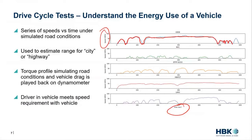And there are lots of these drive cycles. They're there for heavy test, they're for heavy truck, they're there for city, they're there for highway. LA-92 is a highway pattern where we can see we're just holding speed and kind of maybe following somebody on the interstate. It's really simple — it's a series of speeds versus time under simulated road conditions.